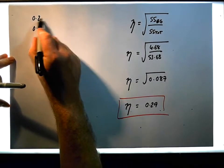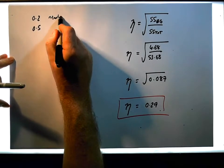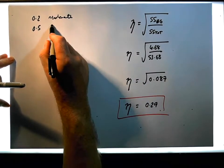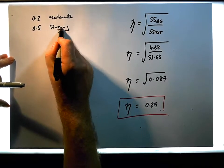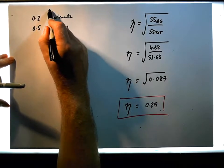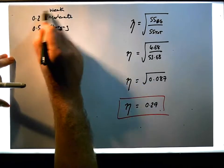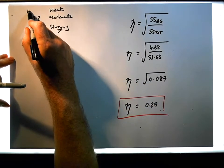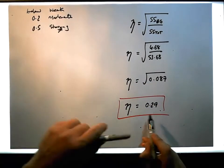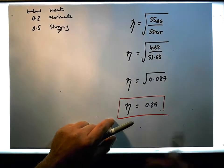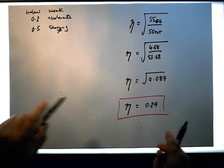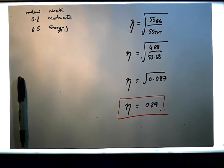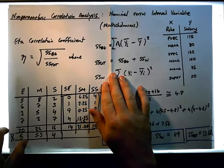And then below 0.2 is actually a weak to no correlation. So you can actually see that we're just above 0.2, so there's a really slight moderate correlation between those particular observations that we've just calculated.